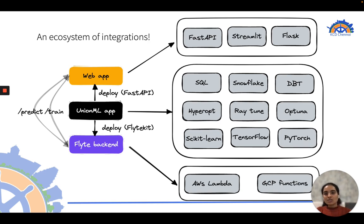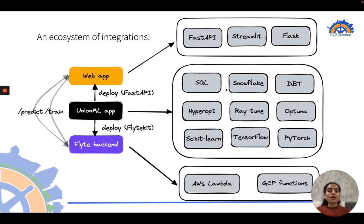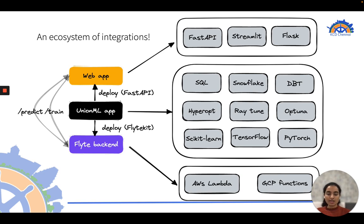Finally, an ecosystem of integrations is planned. Flight currently integrates UnionML with FastAPI, with plans to add Streamlit, Flask, hyperparameter optimization libraries, other machine learning libraries, AWS Lambda, serverless, and event-driven servers.